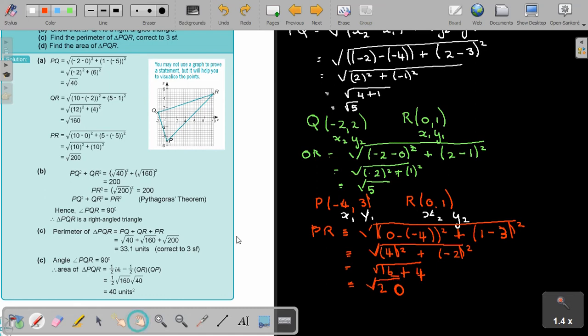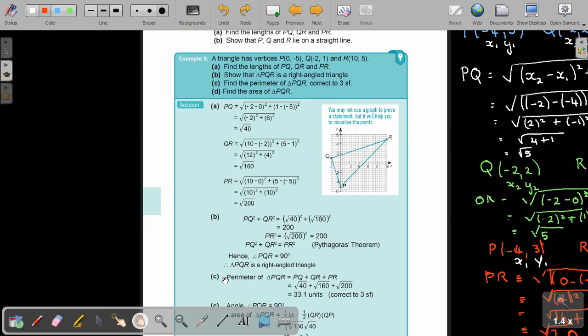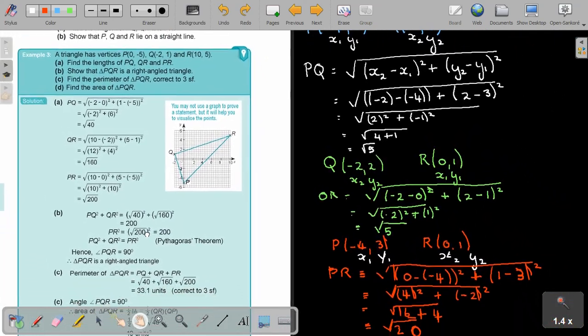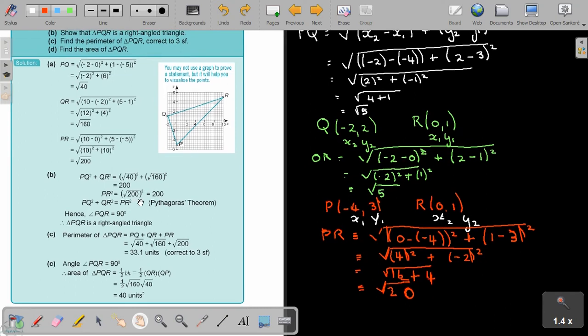And then the question, number B. Let's just go back to number B. Show that P, Q is on a straight line. So I'm just going to do it like this. If I'm just going to say, P, Q plus Q, R equals P, R. So let's see.